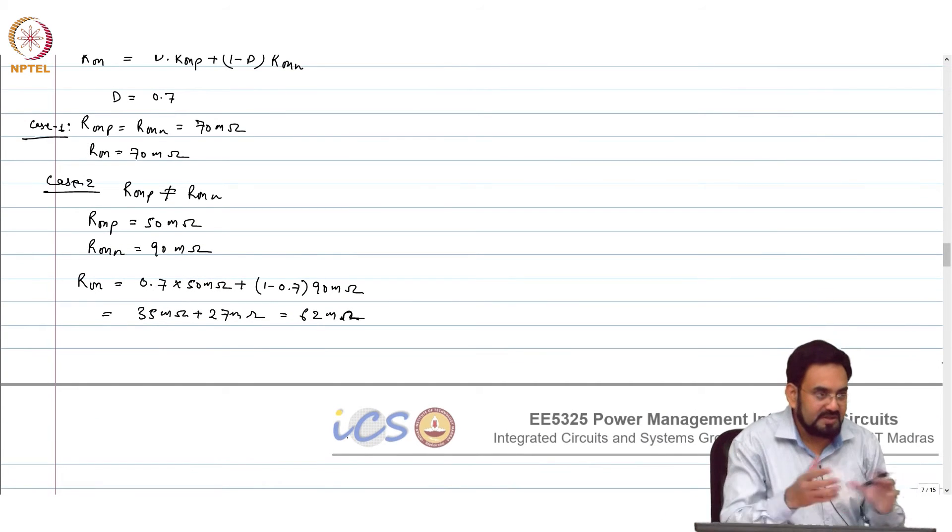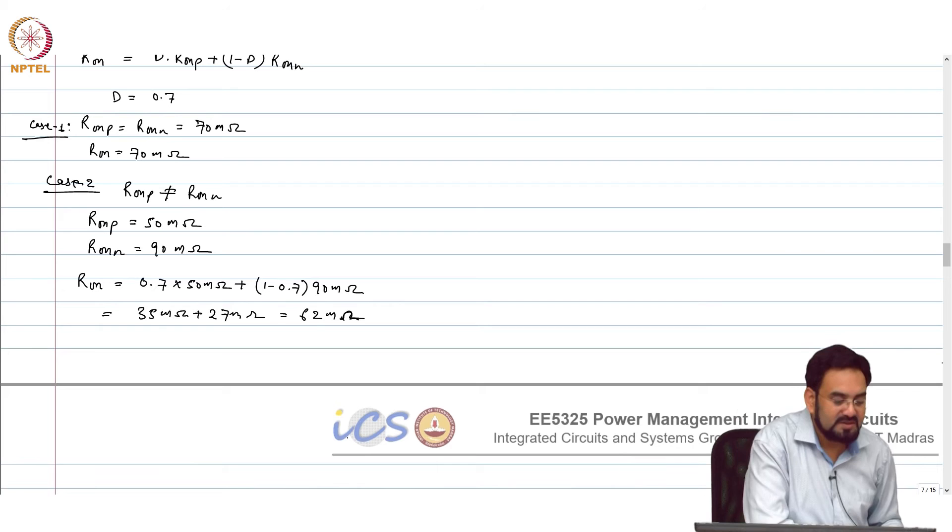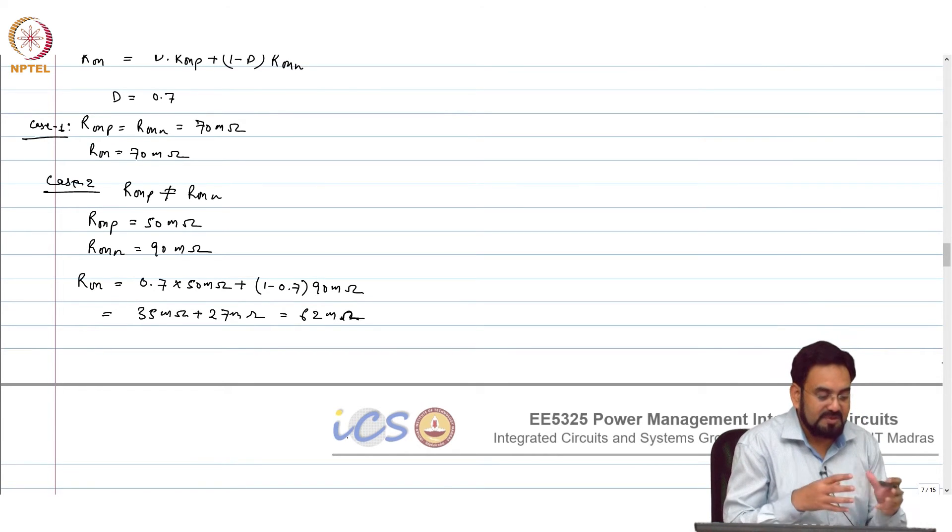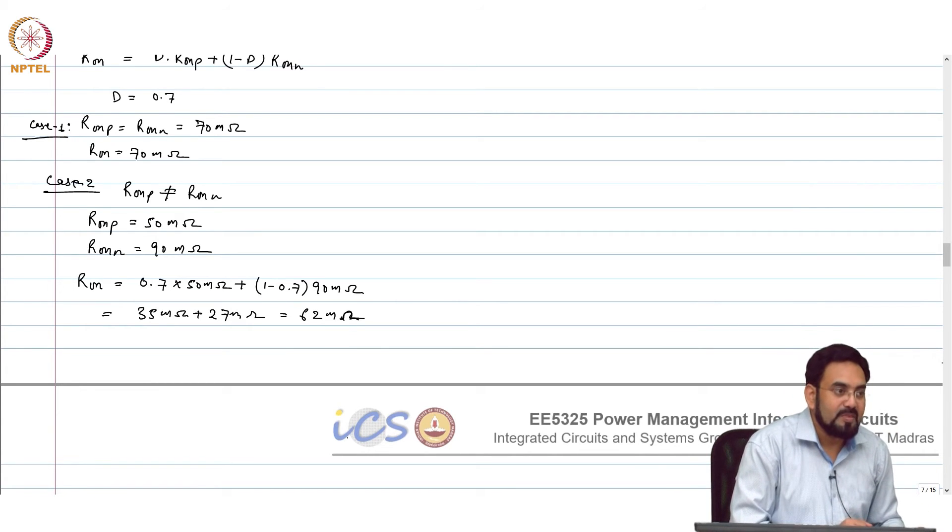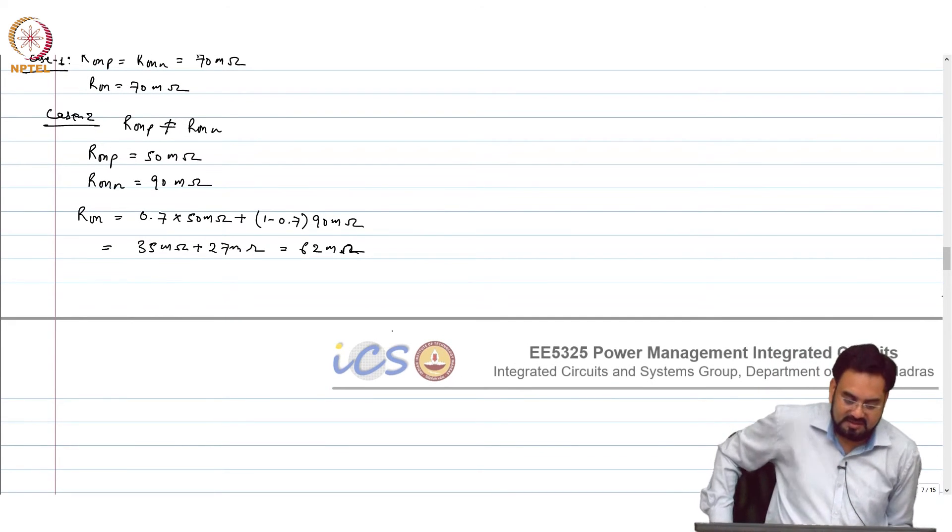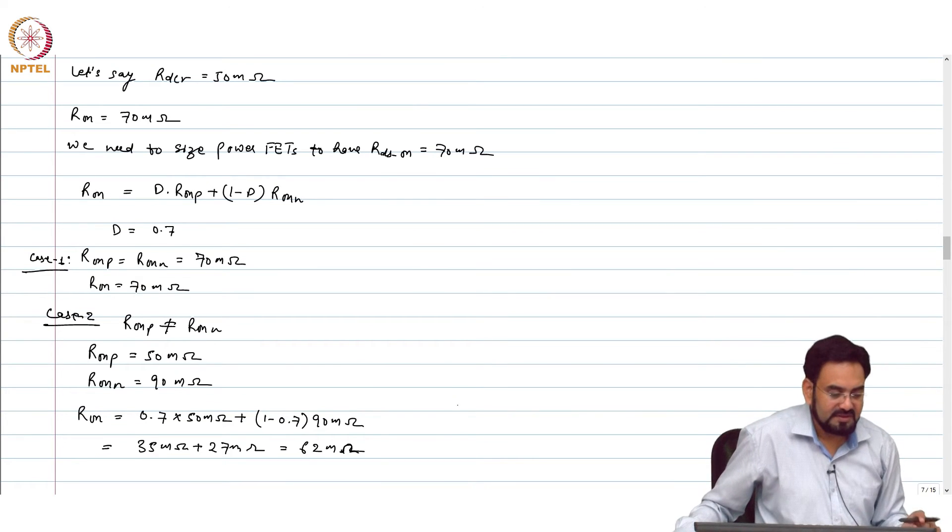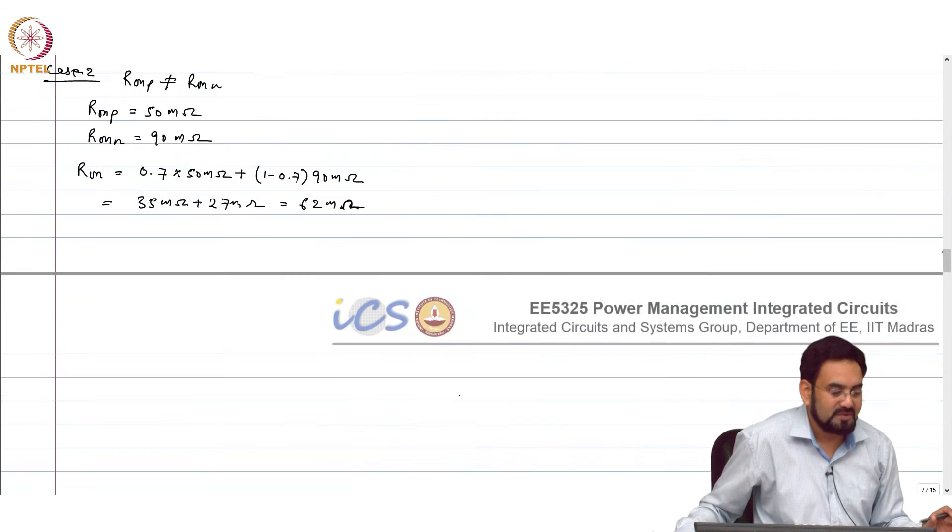So this is one way you can try to optimize. But if I am operating, let's say instead of D 0.7, I am operating let's say 0.3 or 0.4, then I would like to keep R_DS_on of NMOS smaller than PMOS. And while doing this optimization you are keeping the area roughly same, but total R_DS_on is reducing because of the duty cycle. So for now I will just try to go with R_DS_on of P same as R_DS_on of N and 70 milliohms.